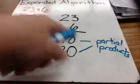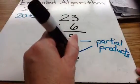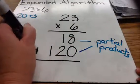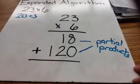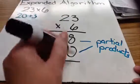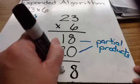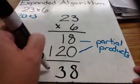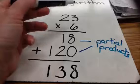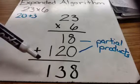We have to put both partial products together to get the final product. By putting them together, we're going to add 18 plus 120. I start in my ones place: 8 plus 0 is 8, 1 plus 2 is 3, 1 plus nothing is 1. So, my final answer for 23 times 6 using the expanded algorithm is 138.